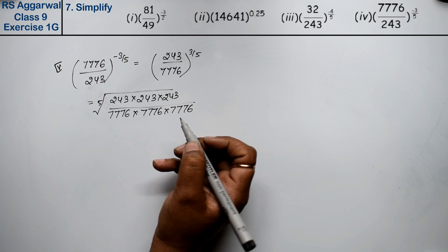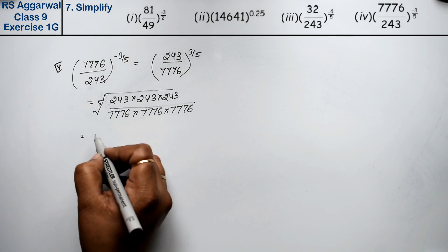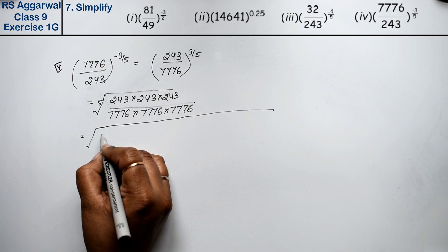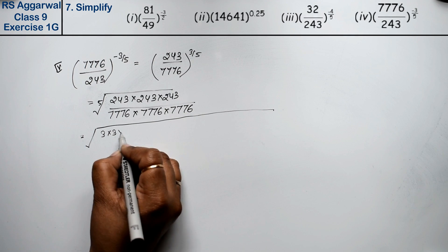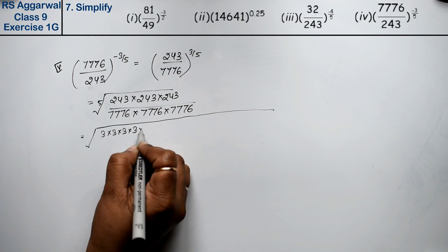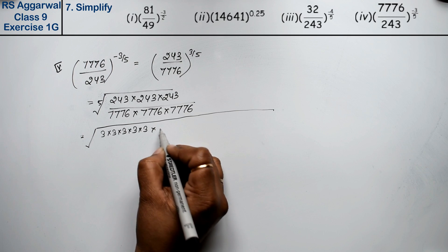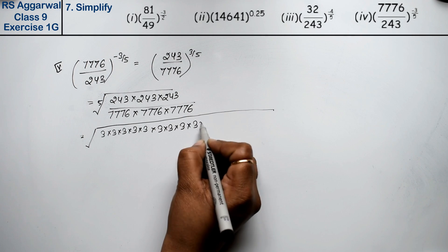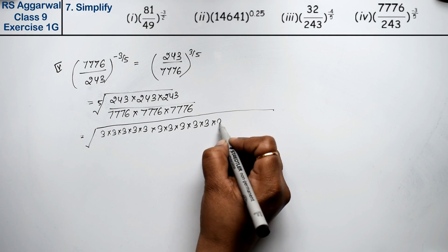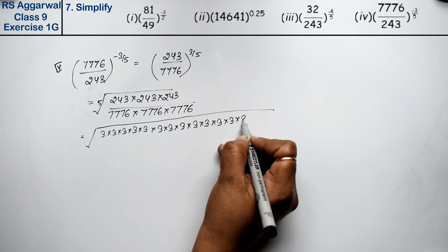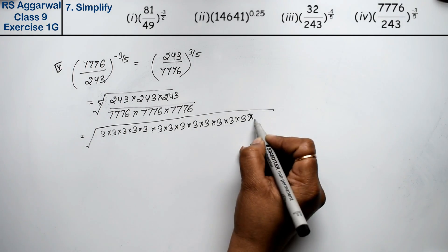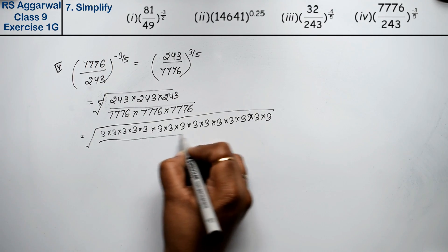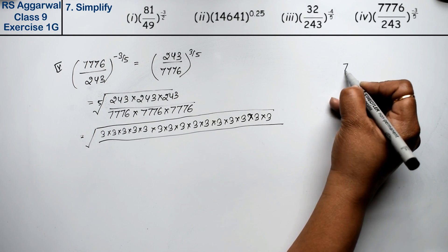We know 243 = 3^5, so writing 3 five times for each of the three 243s. Now finding factors of 7776: splitting it step by step.